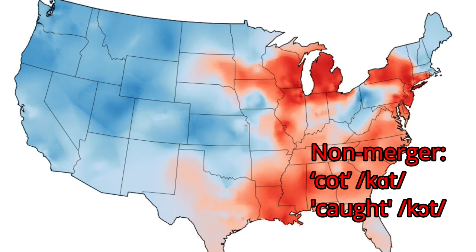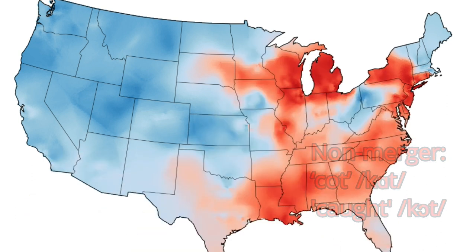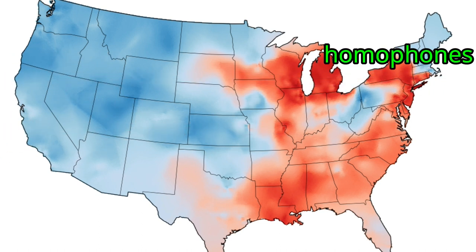In areas in the U.S. where there is no merger, 'cot' and 'caught' are pronounced differently. But in standard American English, they sound the same. Due to the merger in standard American English, these words are homophones.